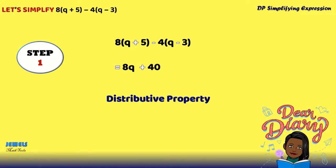And now we're going to multiply our negative 4 to everything inside of its bracket. So negative 4 times Q will equal negative 4Q. Negative 4 times negative 3 will equal positive 12.